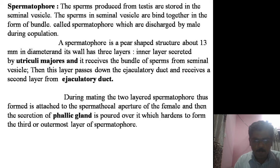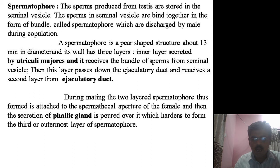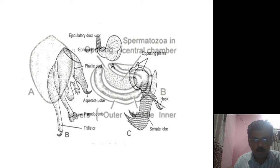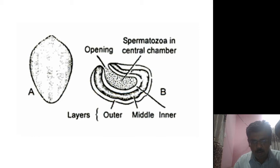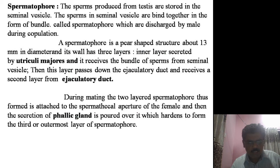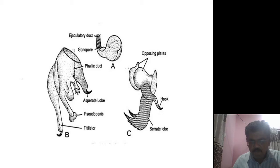The inner layer of the spermatophore is secreted by the utricular majoris secretion. The second layer is secreted from the ejaculatory duct. During mating, the spermatophore is covered by the outer secretion of the phallic gland, which hardens to form the third or outermost layer of the spermatophore.